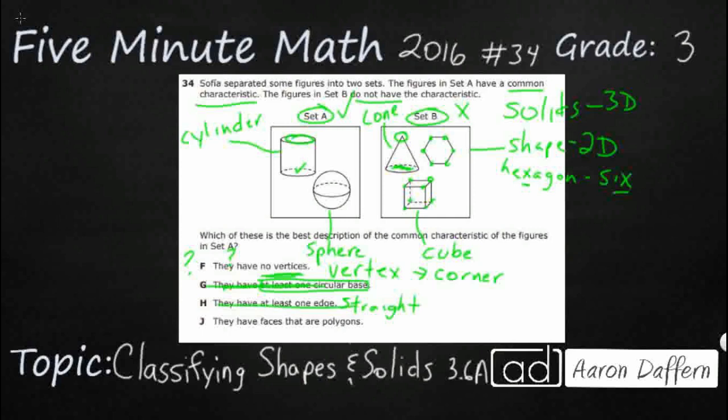They have faces that are polygons. Now that is not true. A polygon is closed and, once again, straight. And these bases here are circles. So that is incorrect. The answer is F.